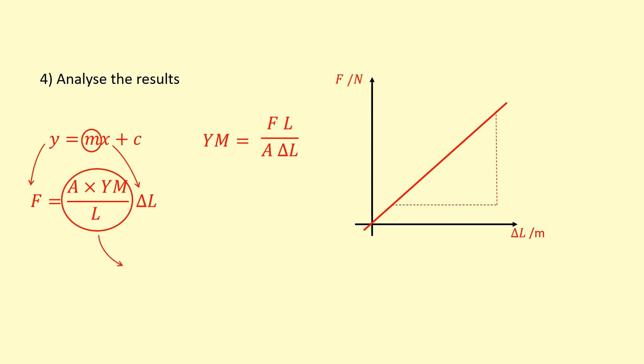Now if you prefer you can just plot force against extension the other way around, so we've flipped it around, in which case your Young's modulus is going to equal gradient times length over the cross-section area.